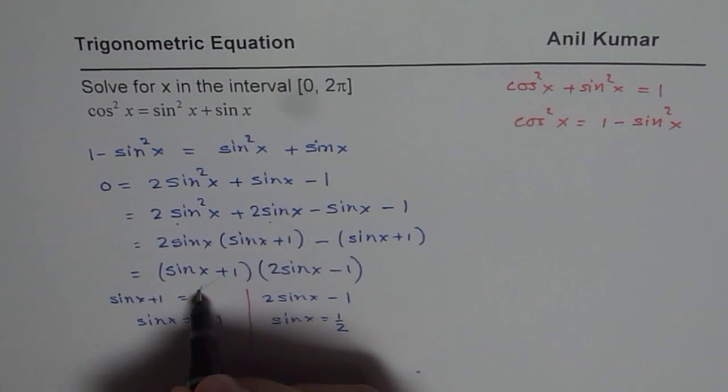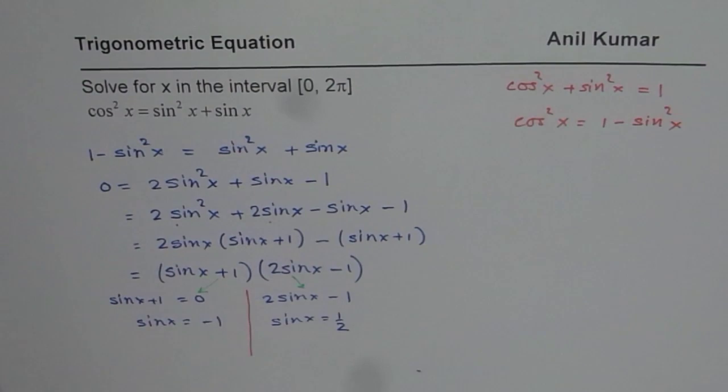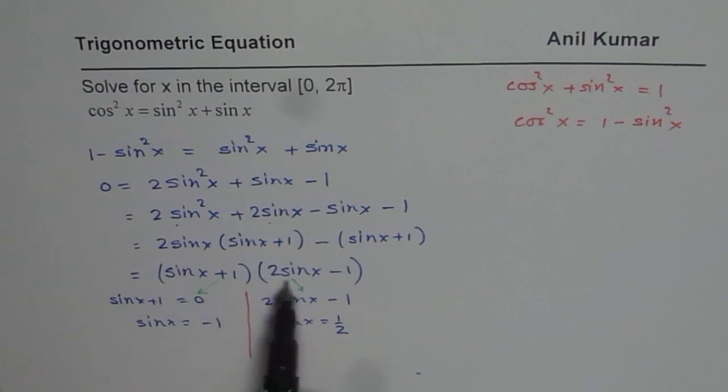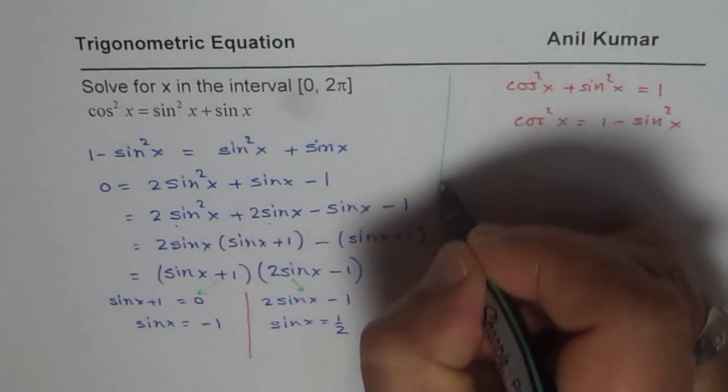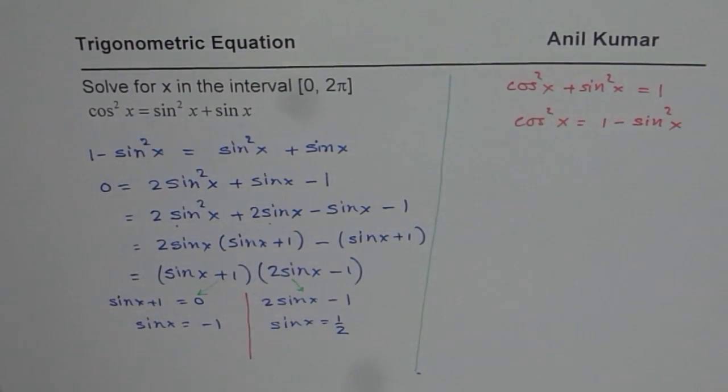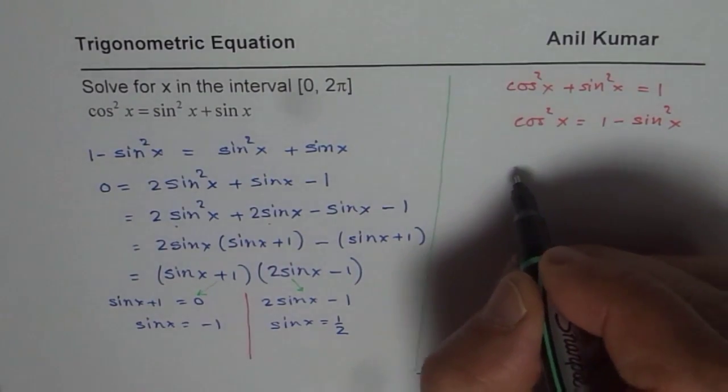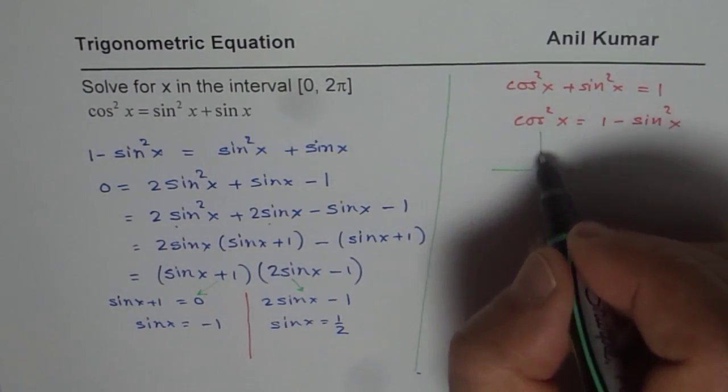So as you can see, there are two possibilities. So these are the two possibilities for getting the factor multiplication to 0. So now let us solve for this and see what are the possible solutions. Now when is sin x equals to minus 1 or half? What kind of solution are we looking for?